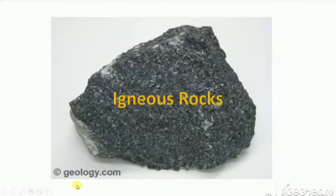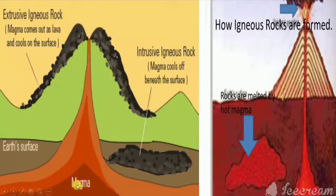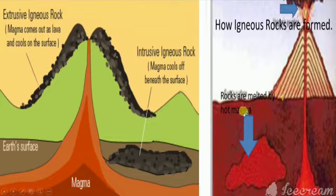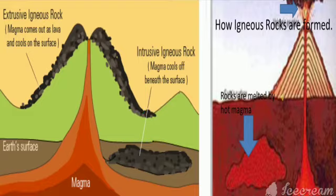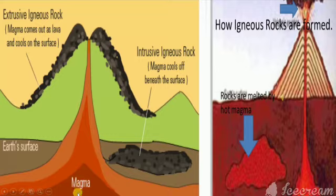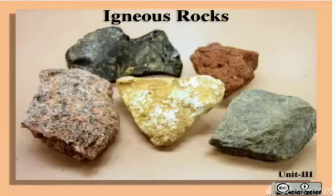First, we will look at igneous rocks. When the molten material known as magma within the crust, and lava on the surface, cools down and solidifies, it gives rise to rocks. These are known as igneous rocks. As these rocks are formed from material from the interior of the earth, they are also referred to as primary rocks. These rocks generally appear hard and homogeneous.